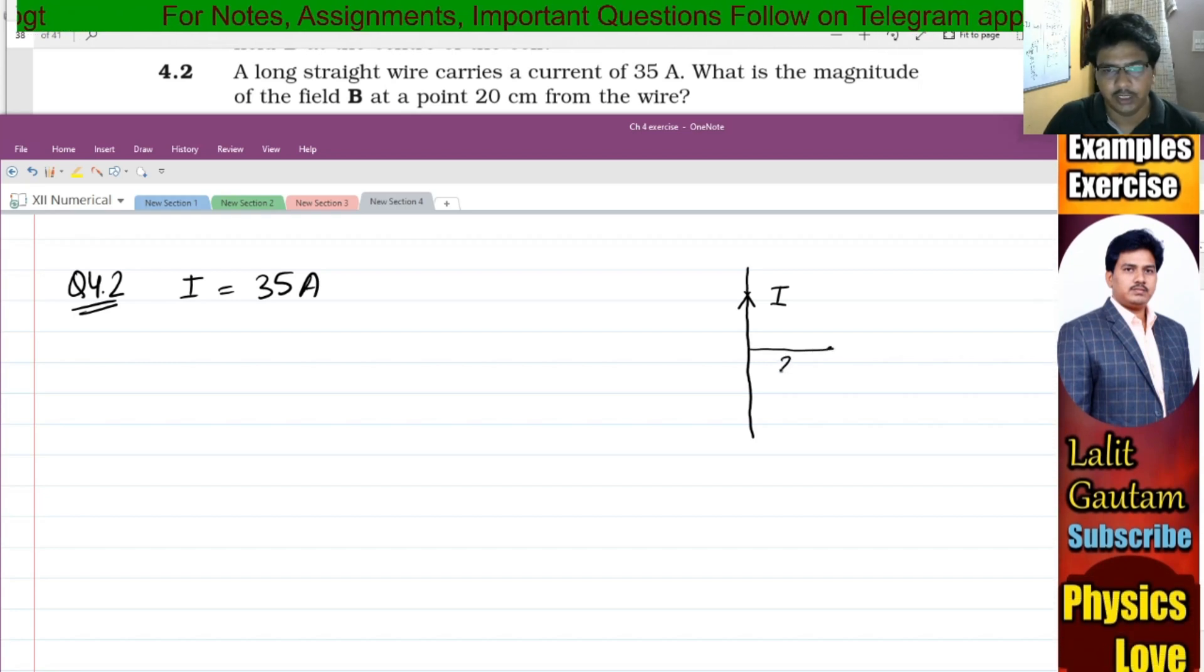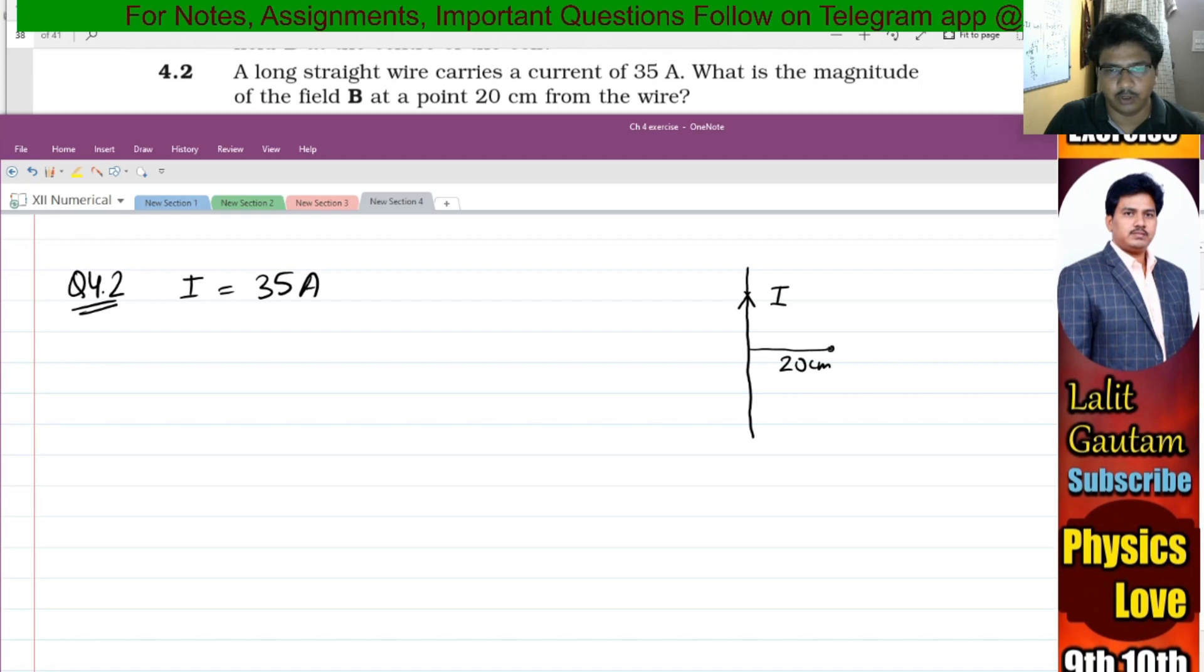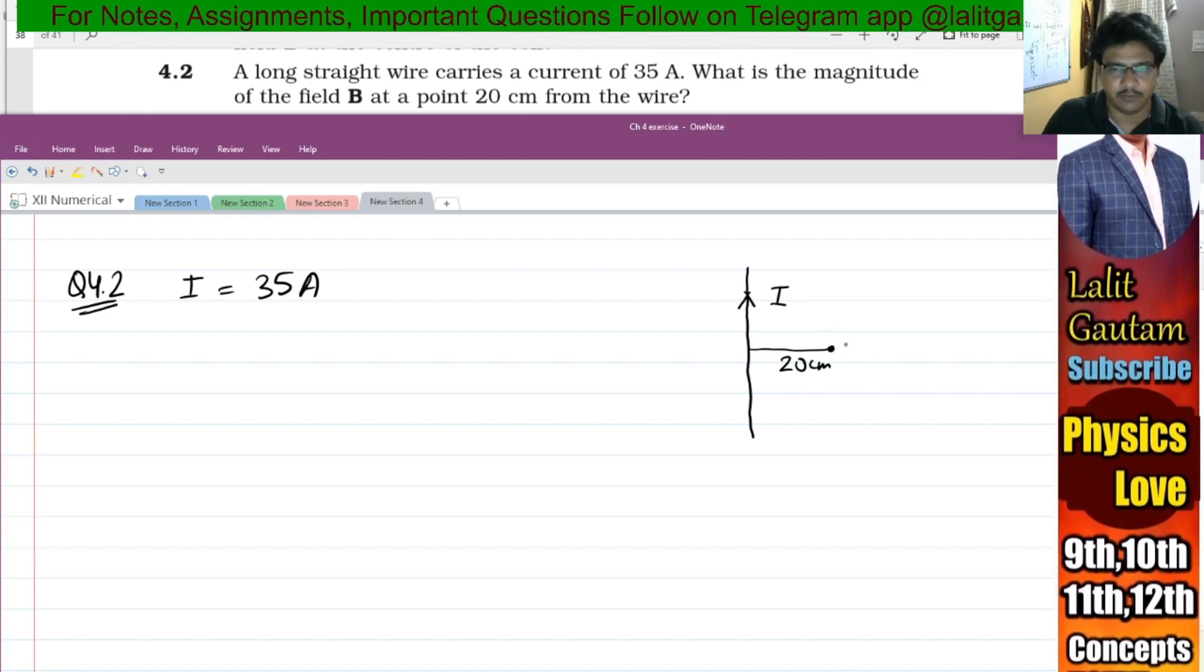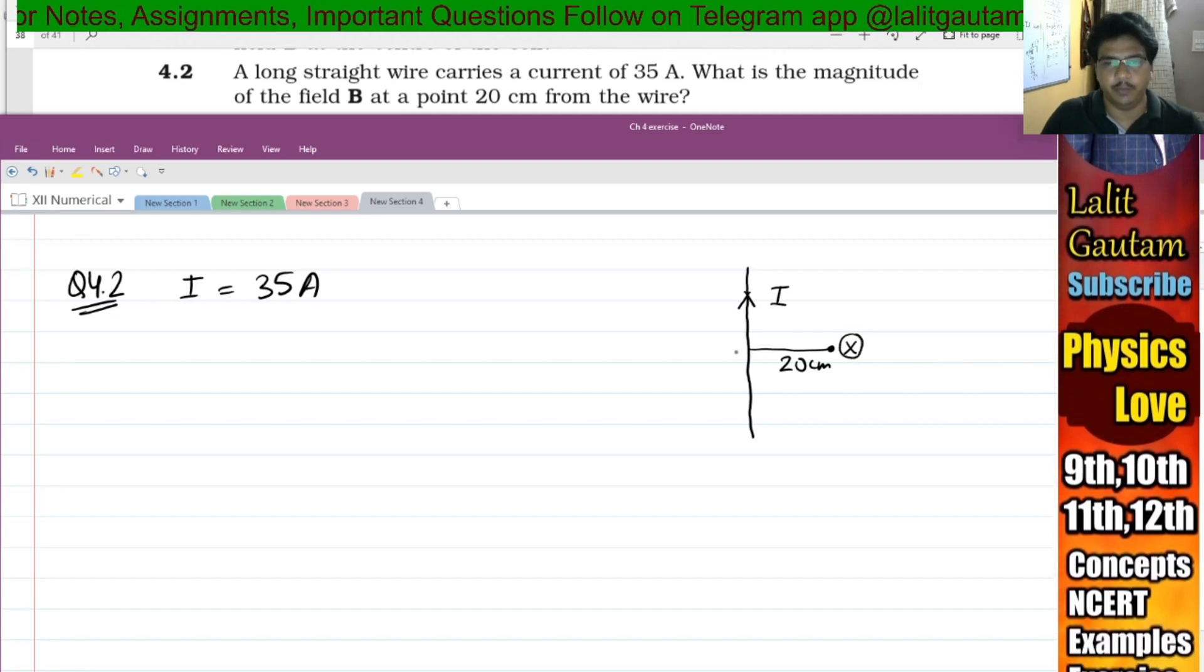We need to calculate the magnitude of magnetic field at a point 20 centimeter away. The magnetic field direction will be into the plane of the paper.